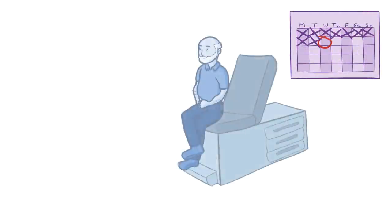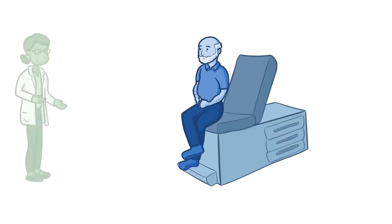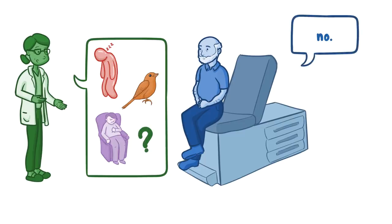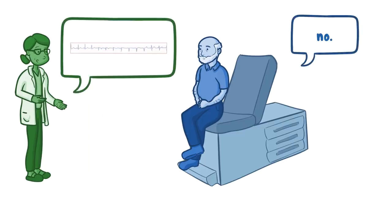One week later, Joseph arrived for his appointment. Dr. Baldwin asked Joseph if he experienced any exhaustion, fluttering in his chest, or shortness of breath lately, but Joseph said no. His ECG now showed normal electrical activity.